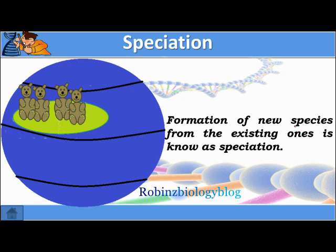Before we move on to speciation, we need to understand the meaning of the word species. A species is a group of similar individuals who can interbreed with each other and produce fertile offspring. Interbreeding means the gametes are compatible so that egg and sperm can fuse. Fertile offspring means the offspring should be reproductively active, otherwise your species will come to an end.